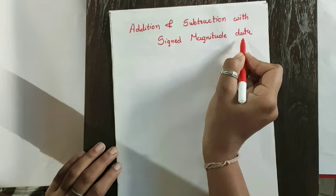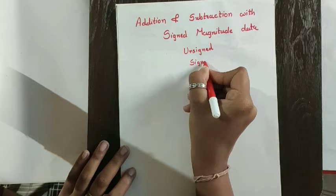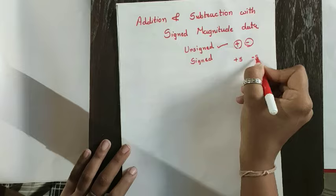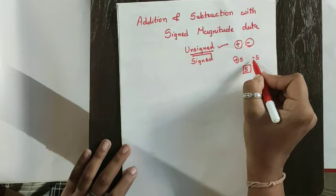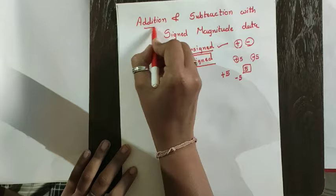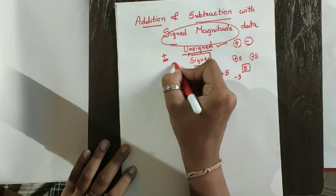First of all, we need to see what is the difference between unsigned data and signed data. In unsigned data we do not consider the sign plus or minus. So whether I am having plus 5 or minus 5, in unsigned data it is 5 only. Whereas with signed data, 5 means I have to give the sign also, whether it is plus 5 or minus 5.